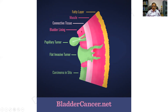The bladder wall is composed of two layers of muscle with connective tissue in between and external serosa. Three tumor patterns are seen: one is a papillary tumor; another is flat and infiltrating down; and the third is limited to the epithelium, called carcinoma in situ. These three patterns should be remembered.